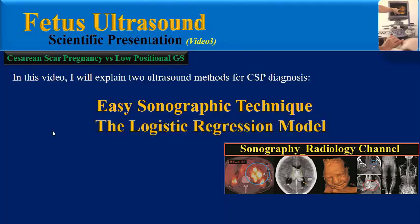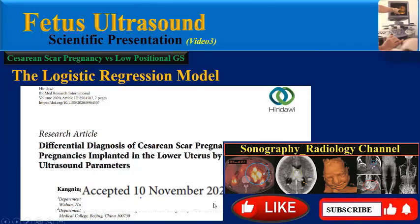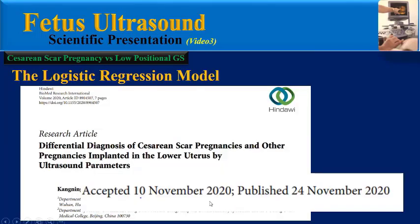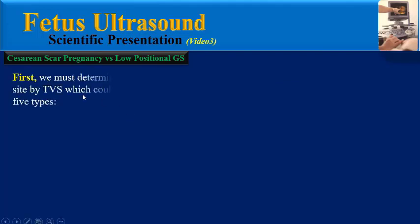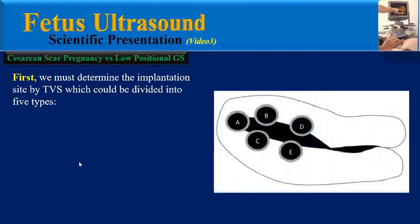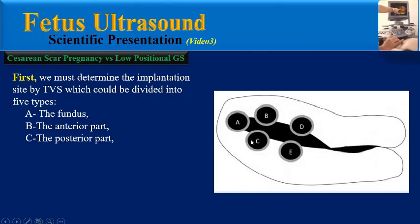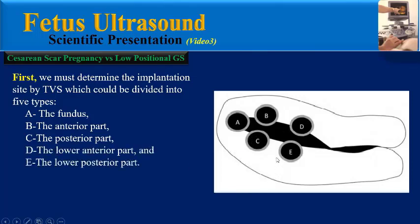The second technique is the logistic regression model, according to a paper published in 2020. In the first step, we must determine the implantation site by transvaginal ultrasound, which could be divided into five types: in the fundus, anterior part, posterior part, the lower anterior part, and the lower posterior part. Of course, these types of implantation sites need no further evaluation.